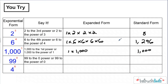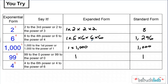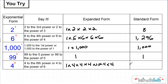Next: 99 to the zero power, or 99 to the power of zero. This is our zero exponent rule — in expanded form that's just one, and in standard form that's just one. Anything raised to the zero power is always one. Finally, four to the sixth power, or four to the power of six. The base is four and we want six copies: four times four times four times four times four times four. In standard form, four to the sixth power is 4,096.